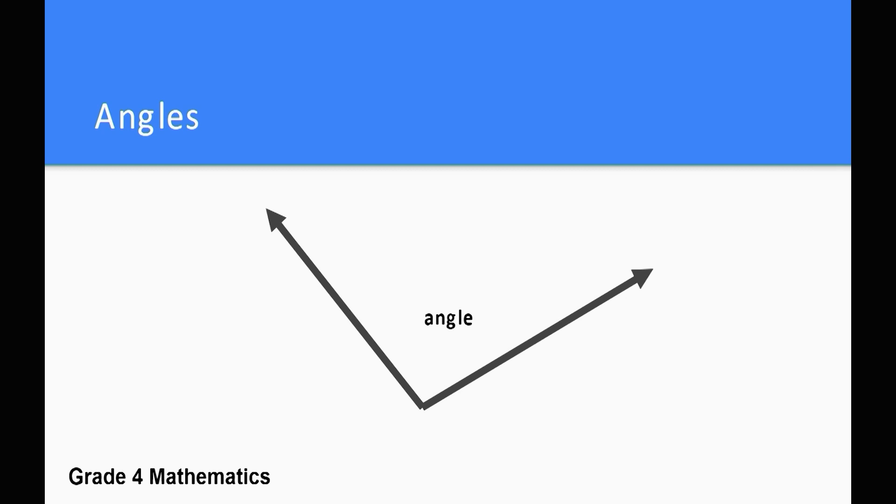Two rays that have the same end point create an angle. The space inside the two rays is the angle. Draw two rays with the same end point on your paper. You drew an angle.